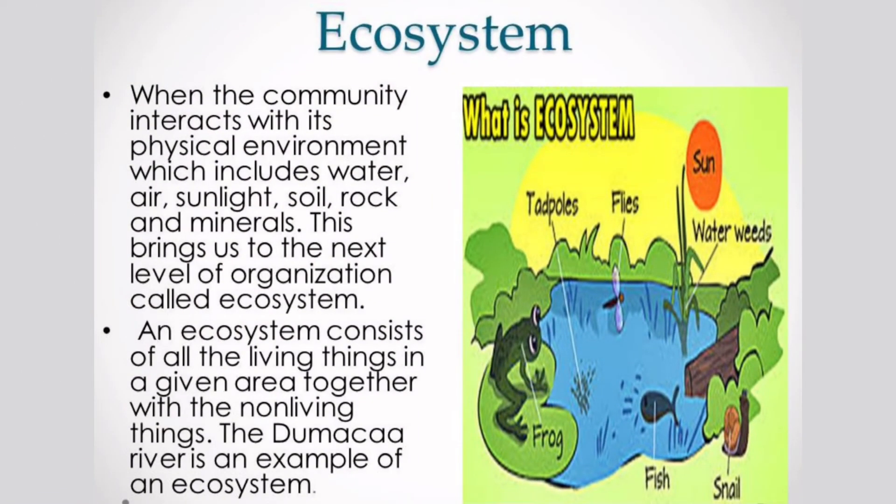When the community interacts with the physical environment, which includes water, air, sunlight, soil, rock, and minerals, this brings us to the next level of organization called ecosystem. An ecosystem consists of all the living things in a given area together with the non-living things. The Dumaka'a River is an example of an ecosystem.